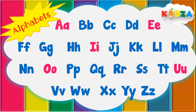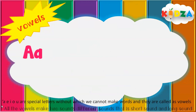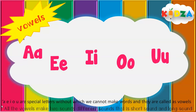Why have the letters been printed in two different colors? Did you notice that? The letters which are in pink are vowels, and the rest which are printed in blue are all consonants. A, E, I, O, U are special letters — without them we cannot make words, and they are called vowels.